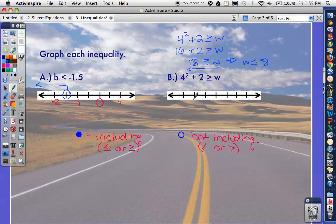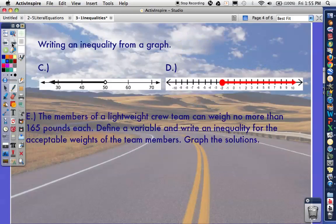To graph, you need three numbers, so 17, 18, 19. We're filling it in this time because we are including 18. And I want all the numbers less than, so I'm going to the left. If you have questions on graphing, try to practice a few more problems. I think we should all feel pretty comfortable with this.